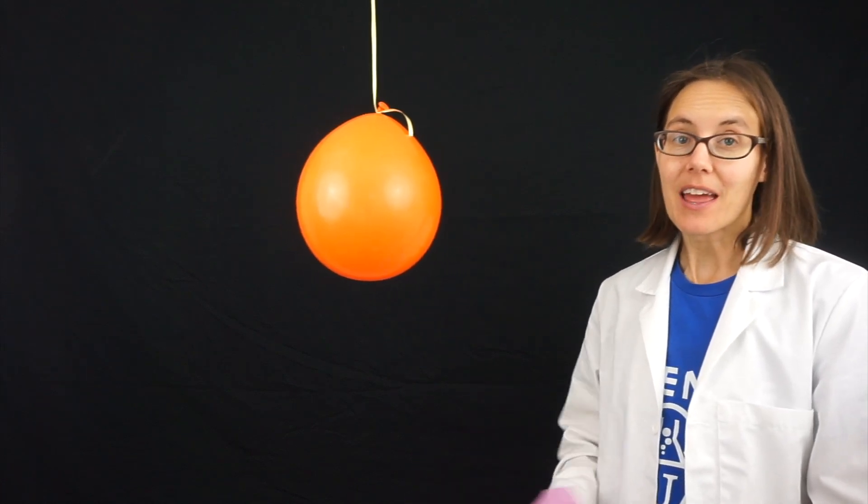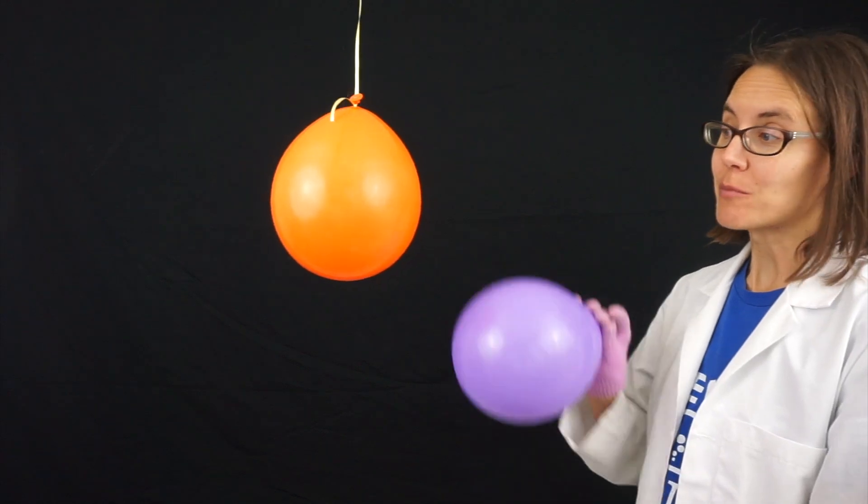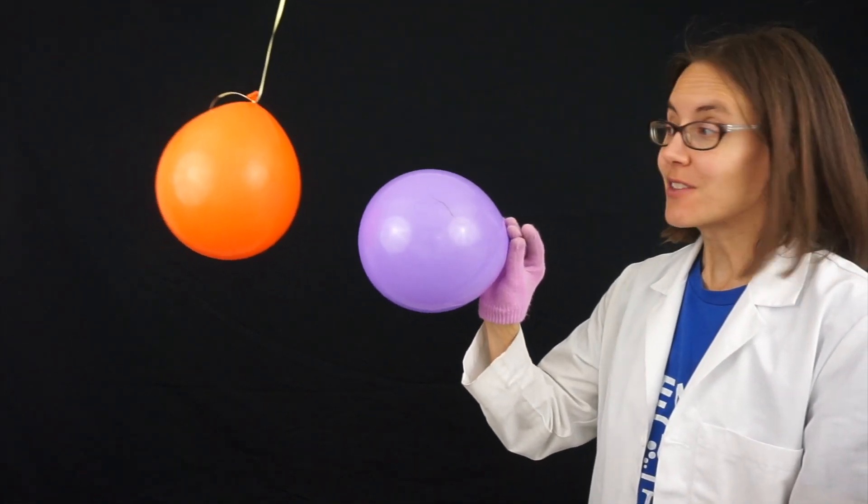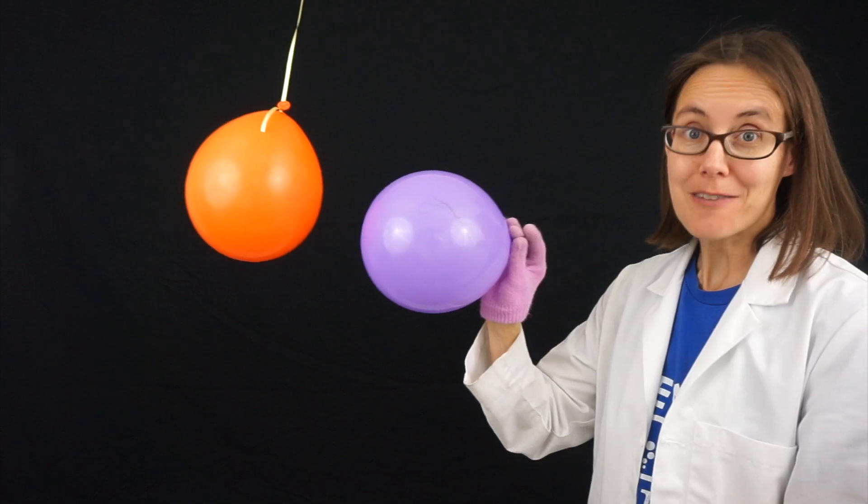This orange balloon hanging from this ribbon and this purple balloon are both charged, and that means that they repel each other. And if I bring them close together, you can see that the orange balloon moves to get away from the purple one.